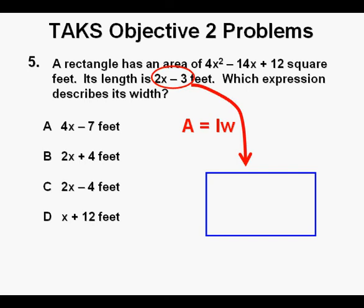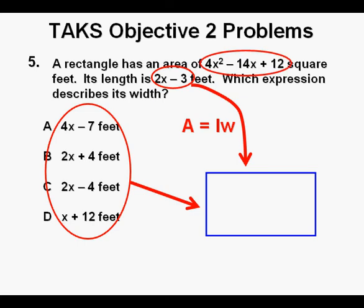This expression, 2x minus 3, which is the length of the rectangle, times one of these expressions on the left given as answer choices A through D, is equal to this area, 4x squared minus 14x plus 12. There are a lot of ways to solve this problem, but what we'll do is set up the rectangle we drew earlier into a box to multiply the expressions for length and width, which I've done by placing two line segments to split up the rectangle into four cells.